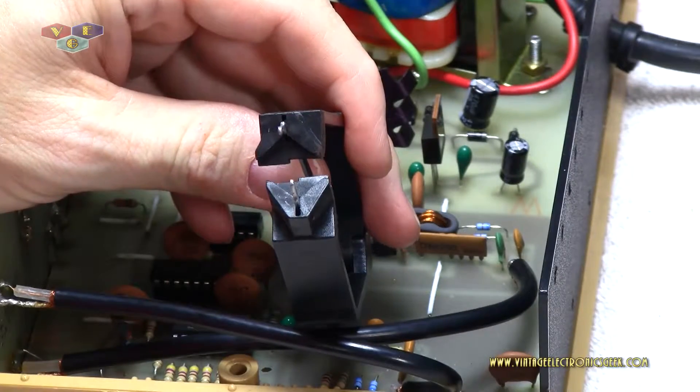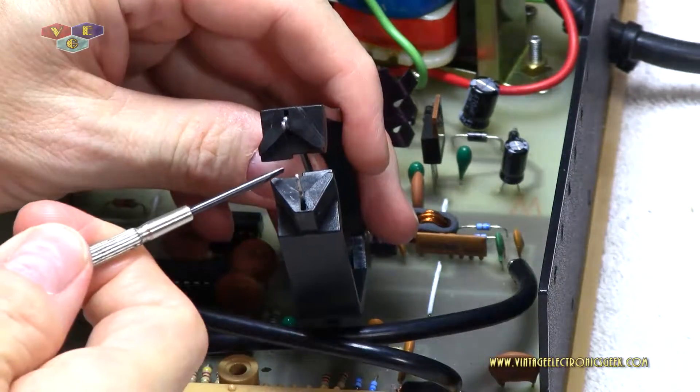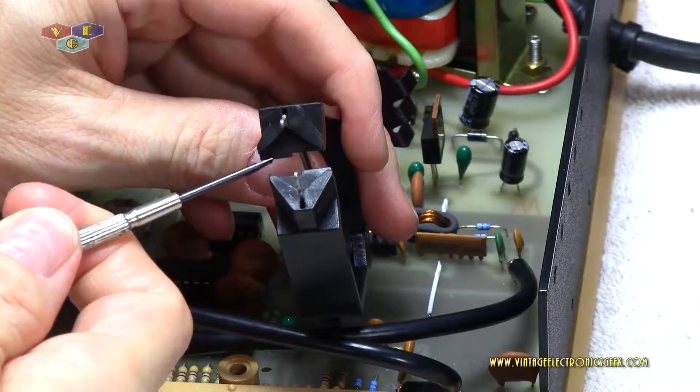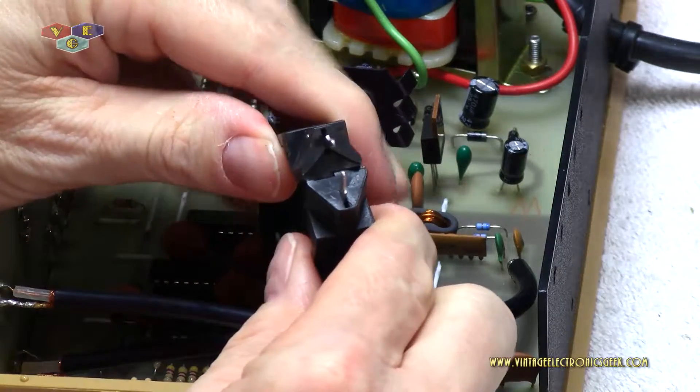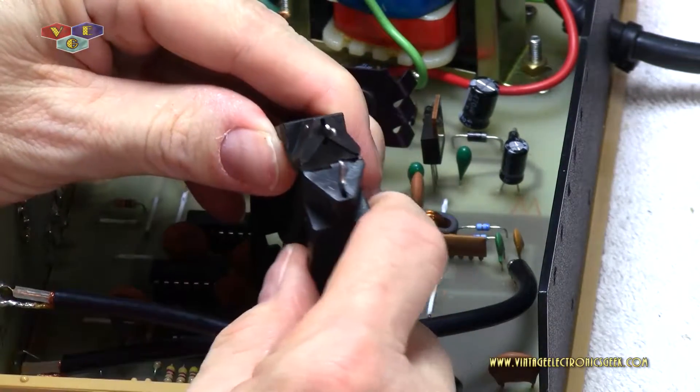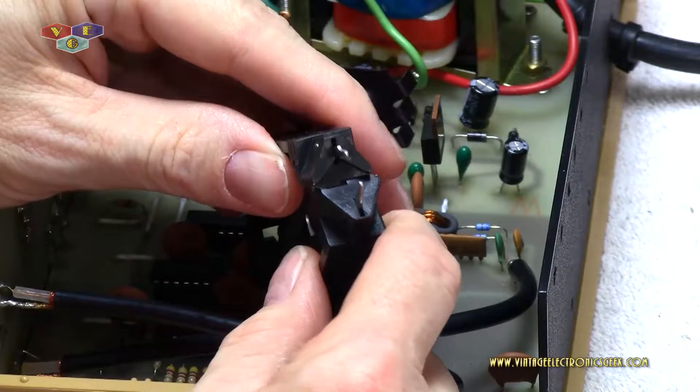One nice thing about this tool, when you smash down, it has this little lock right here on both sides. I believe the camera could pick that up. And so when you're smashing down, that little lock stops the tool from sliding, at least in this direction. And it does a pretty good job.